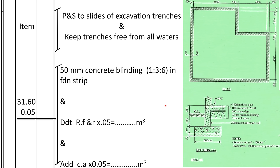For the 50mm concrete blinding under the oversite concrete, we measure in square meters: center line × width of trench (0.6m). Description: 50mm concrete blinding, 1:3:6 mix, in foundation strip. This concrete replaces soil, so we deduct the equivalent volume from refill-and-ram and add it to cut away, since we no longer need that soil inside.